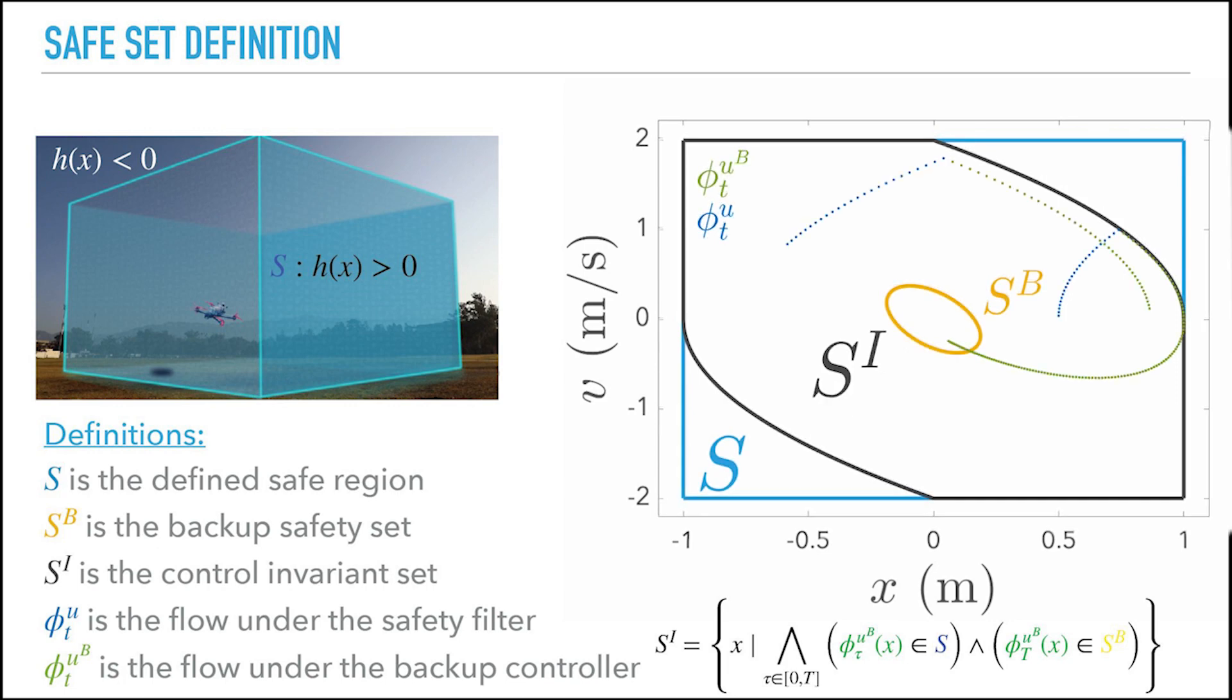We use controlled barrier functions to minimally alter the desired control while maintaining the quadrotor in a safe space. We utilize a backup controller to construct an invariant backup safe set. This approach is less computationally complex than traditional control barrier functions and thus can be run on a simple microcontroller.